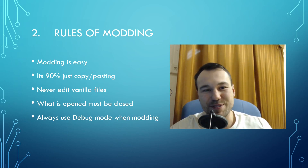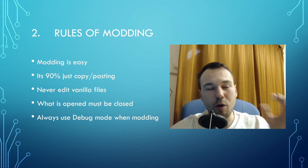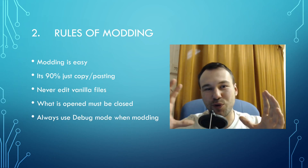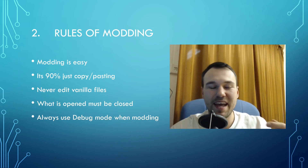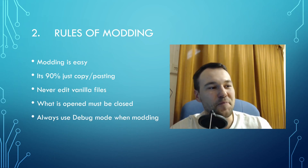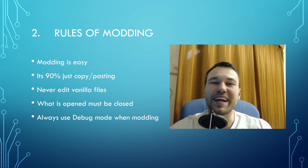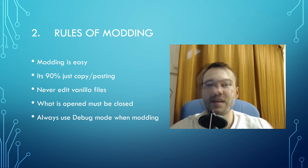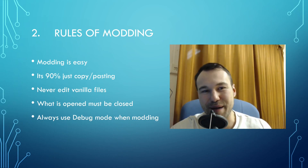Fourth rule is: what is opened must be closed. When you are modding, you will be using a lot of brackets. When you open something, you have to close it with a special bracket again. If you don't close it, your code will be broken — it's one of the most common coding mistakes ever. It will make more sense when we are actually modding. Fifth rule is that you should always use the debug mode when modding, because it makes your modding life much, much easier.